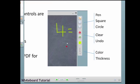Let's take a closer look at the controls. There are three groups of controls: the drawing tools - pen, circle, square. You can clear and undo, and you can choose the color and thickness of the stroke.